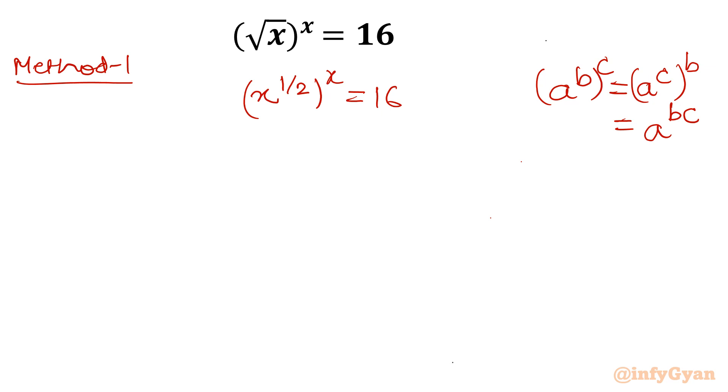So I will use the first relation. I can write x power x whole power half equal to 16. Raise both sides second power. This 2 and half 2 that value will get cancelled out. What is left: x power x is equal to 16 power 2.